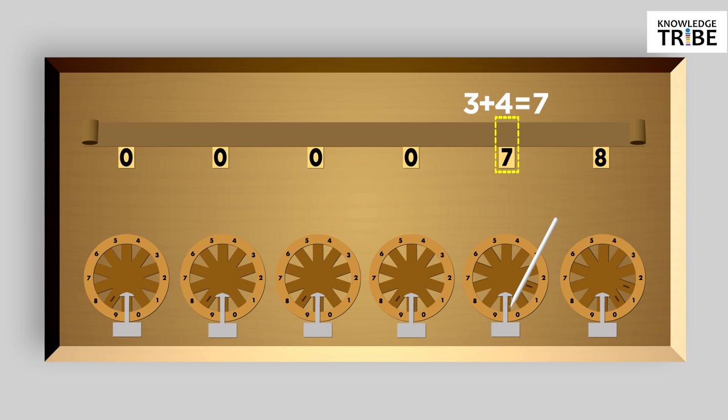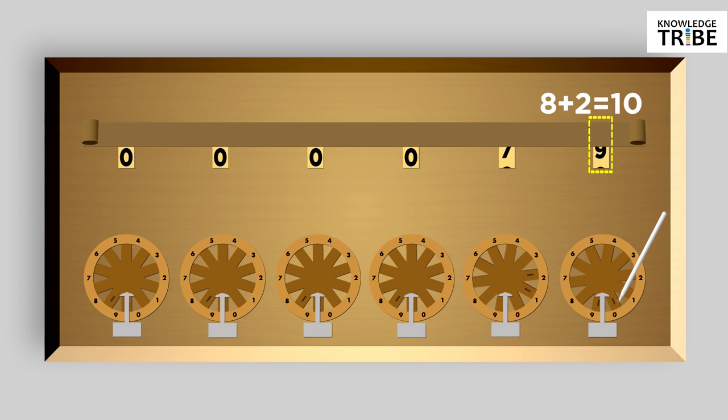Now we need to add 2 in the 1s place. For that, rotate the spoke near 2 till it reaches the fixed stop. That will make the value in the 1s place 0 and it automatically adds 1 to the 7 in the 10s place, making the value in 10s place as 8.